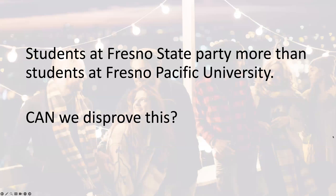Let's take another example. My claim is that students at Fresno State party more than students at Fresno Pacific University. Again, what observation would you need to disprove this? It could be true. But you could collect data on Fresno State and Fresno Pacific University students and compare it, and you could potentially disprove this. It might be true, but you have the ability to collect information and say we found information that disproves this — or we didn't find information that disproves this, maybe it's true. But we did not prove it. No proving — I don't want to see that in your paper.